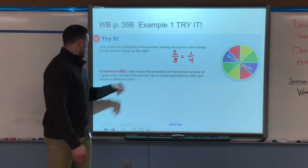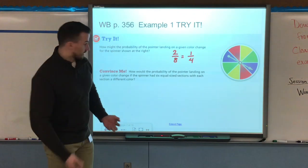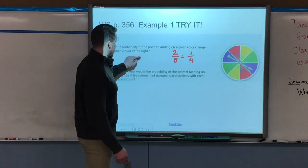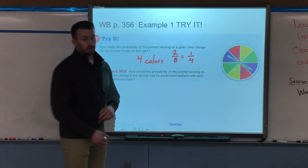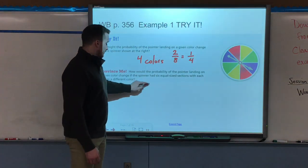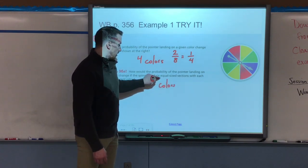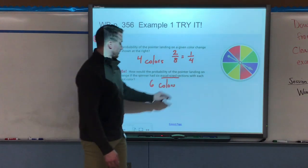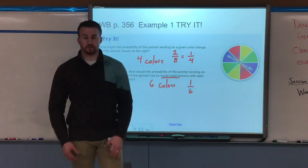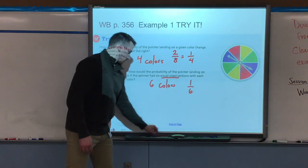How would the probability of the pointer land on a given color change if the spinner had six equal size sections with each section a different color? Well if I have six colors here, I had four colors so I could only have four possible outcomes. Here if I have six colors and they're all equal size sections, my probability turns into one sixth, so my chance of it happening lowers a little bit.